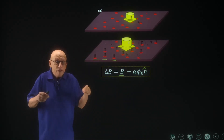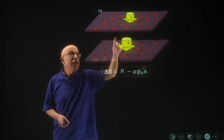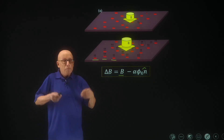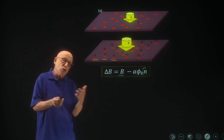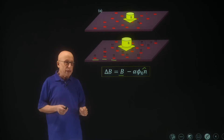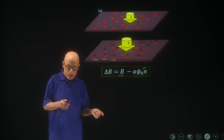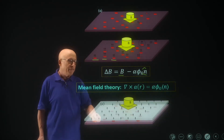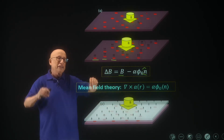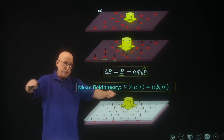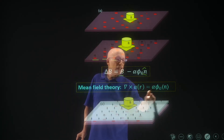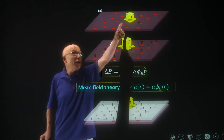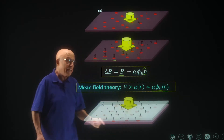This means we made the problem harder — we started with a magnetic field that was a C number, and now it became a quantum operator. But the hope is that we can make an approximation that is less natural in the original formulation. We will carry out a mean field approximation in which we replace this quantum operator by its expectation value, spreading the magnetic field attached to the electrons uniformly over the entire sample.